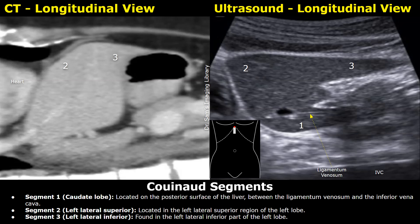We will be looking at both CT and ultrasound images. This CT image is in longitudinal plane. It is rotated in a way that it matches the ultrasound image on the right, which is also in longitudinal plane. This is just for understanding.